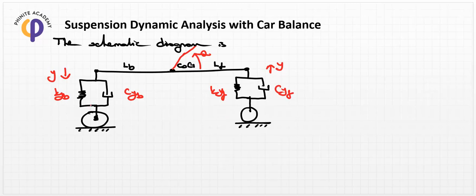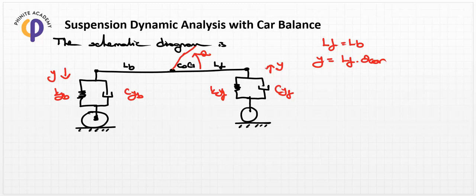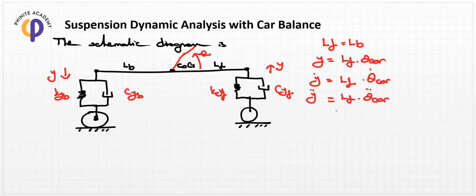At the back or the front of the car, we first consider that lf is equal to lb. From the geometry, y is equal to lf times theta_car, because the theta value deflects this ratio by lf. Similarly, y_dot is equal to lf times theta_dot.